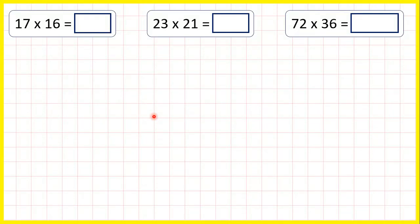We can use factor pairs to help us multiply. So for this first question, we have 17 times 16.